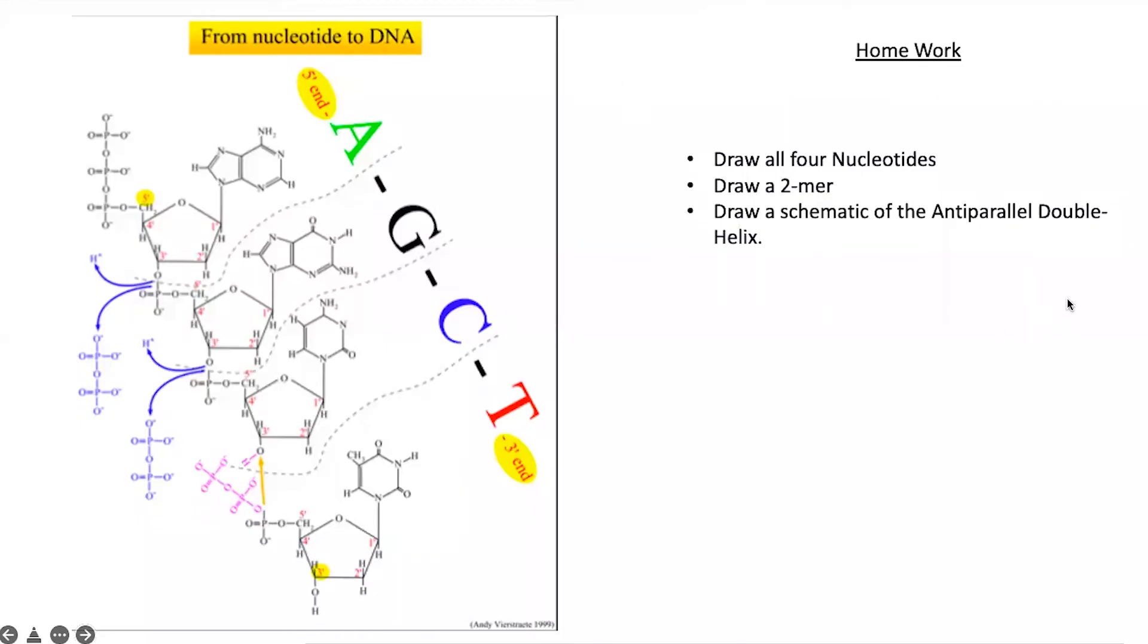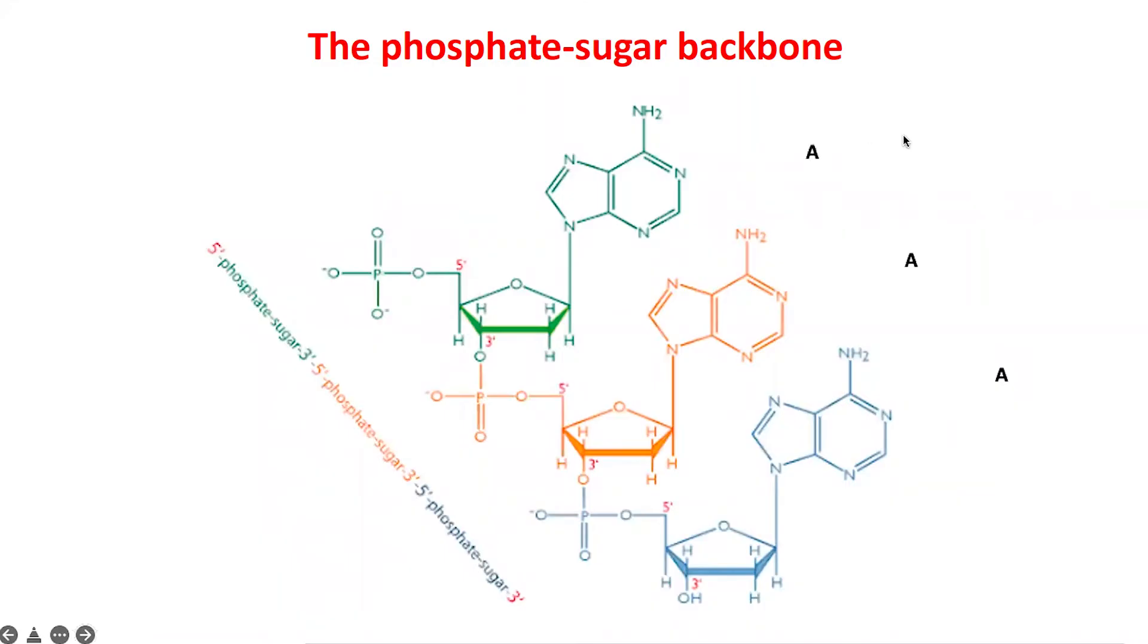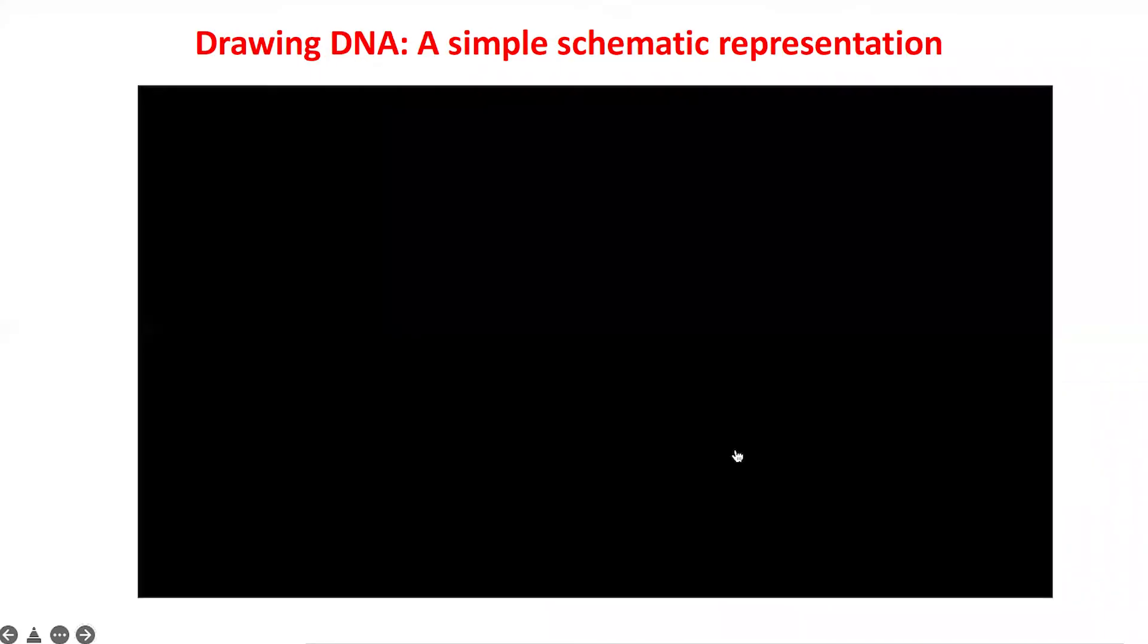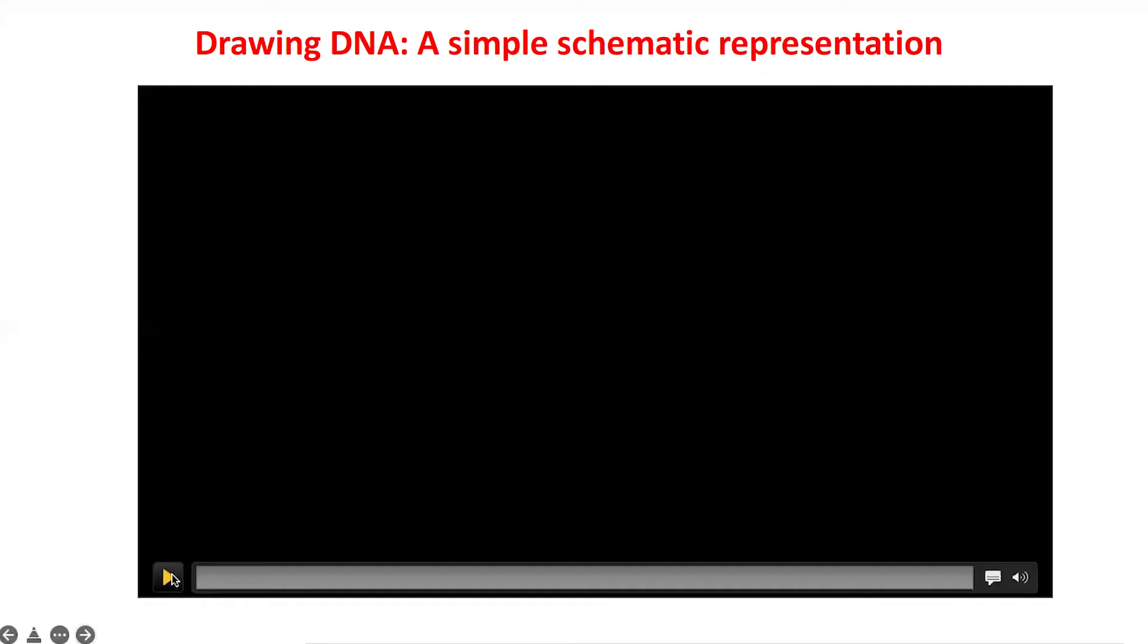I'll strongly urge all of you to do this homework. I would ask you to draw all four nucleotides, draw a dimer—that is, put two nucleotides together—and see how you lose two phosphates and a proton. Also draw a schematic of an anti-parallel double helix. Here is a picture showing the phosphate-sugar backbone and the nucleotides—in this case adenine—sticking out from the sugars which make up one strand.